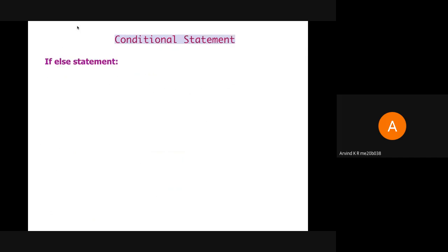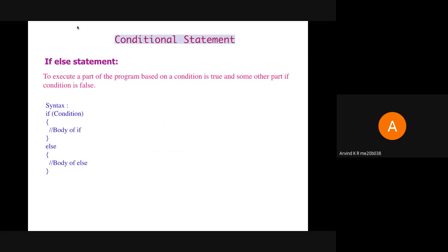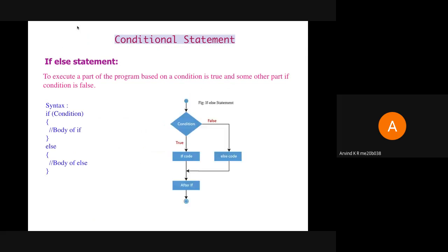Next conditional statement is an if-else statement. Whenever you want to execute a particular part of a program if a condition is satisfied, and some other part if the condition is not satisfied, we use if-else. The syntax is similar to simple if, except that we add an else part and a block of statements to it. As shown in the flowchart, first the condition is checked. If the condition is true, then the code corresponding to the body of if gets executed. If it's false, then the code corresponding to the body of else gets executed.